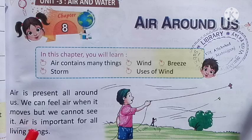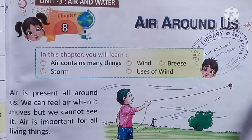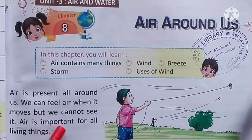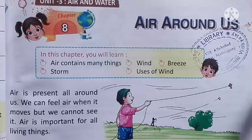Air is important for all living things. कहा गया है हवा सभी जीवित प्राणियों के लिए महत्वपूर्ण है। अगर हवा नहीं रहेगी तो हमारा जीवन पृथ्वी पे संभव नहीं होगा, पौधे भी नहीं होंगे। इसलिए कहा गया है, हवा सभी जीवित चीजों के लिए महत्वपूर्ण है।